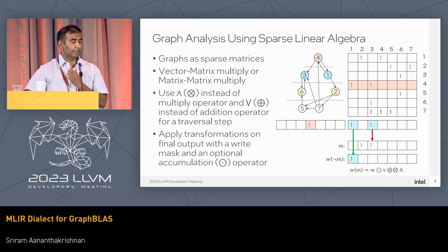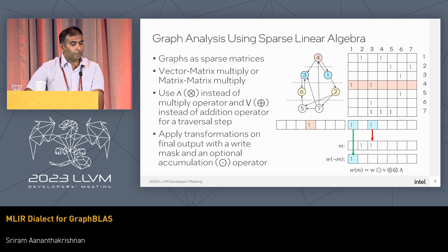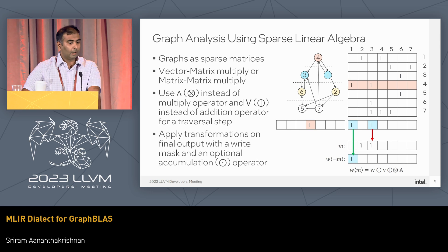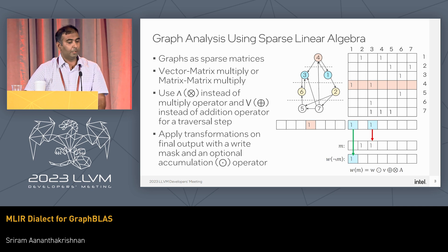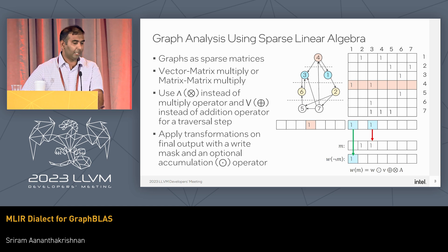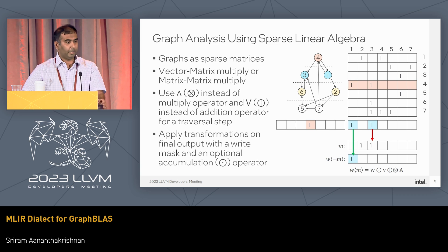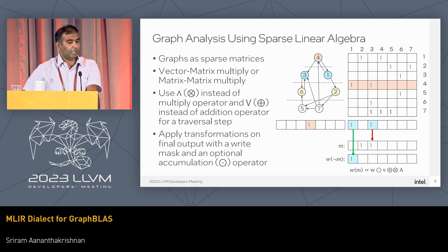Graphs can be represented as sparse matrices. Suppose I want to do a breadth-first search starting at node 4 — I can do this by creating a vector, setting the value at 4 to 1, and multiplying this with the sparse matrix. The output will be another vector which has the neighbors of 4 set to 1. I can repeat this process to find the next set of neighbors. But there is one issue: if a node has multiple incoming neighbors and I use scalar multiply and scalar dot when multiplying the rows and columns, I'll end up with a vector that counts the in-degree of the neighbors.